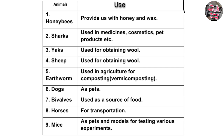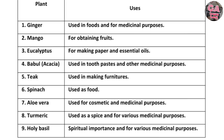Fifth, earthworm — used in agriculture for composting. Sixth, dogs — as pets. Seventh, bivalves — used as a source of food. Eighth, horses — for transportation. Ninth, mice — as pets and models for testing various experiments. Here we completed the uses of animals.